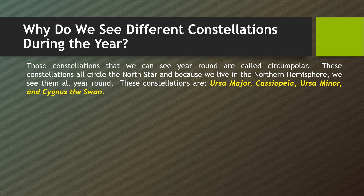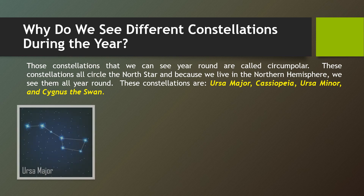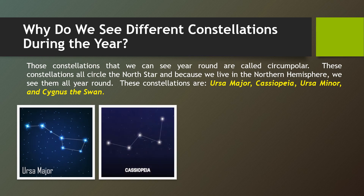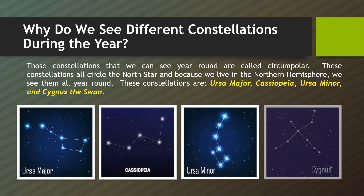Those constellations that we can see all around are called circumpolar. These constellations circle the North Star, and because we live in the northern hemisphere, we see them all around. These circumpolar constellations are Ursa Major, Cassiopeia, Ursa Minor, and Cygnus.